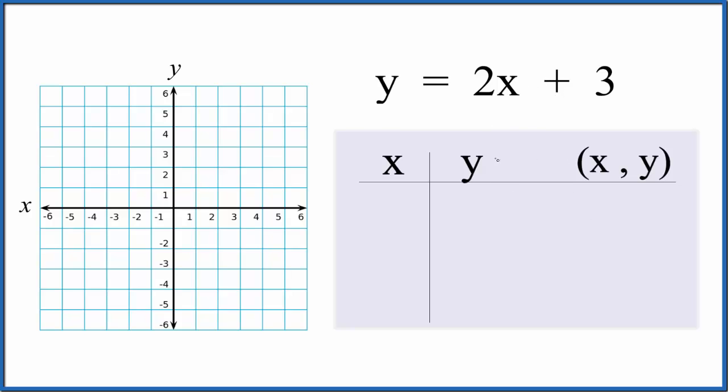First, we'll put points in for x, find out y, and draw the graph. And then we'll check it with the slope-intercept formula, y equals mx plus b.